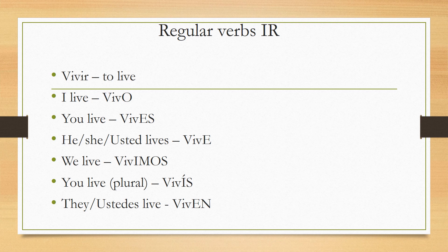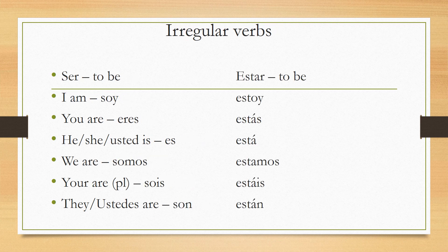Now I'm going to talk about irregular verbs. The problem with irregular verbs is there are no rules — you really need to learn them. I've listed the most common ones. For 'ser' and 'estar' (both meaning 'to be'): 'I am' is 'soy' or 'estoy'; 'you are' is 'eres' or 'estás'; 'he/she is' is 'es' or 'está'; 'we are' is 'somos' or 'estamos'; 'you are' plural is 'sois' or 'estáis'; and 'they are' is 'son' or 'están.' I'll go into more detail later about when to use each one.